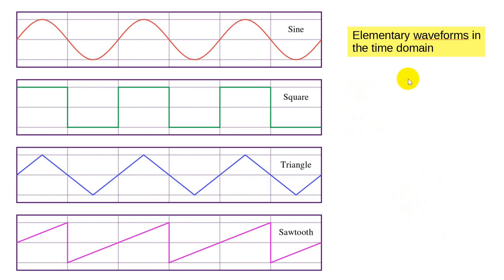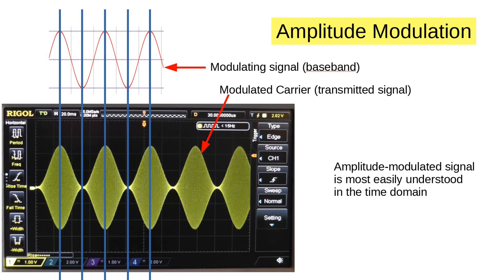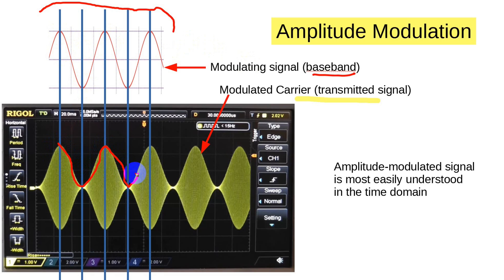This is a quick view of some elementary waveforms in the time domain. Time domain means that along this axis is time. Here's a sine wave, a square wave, a triangle wave, a sawtooth. In a very recent video, I showed this diagram showing the modulated carrier — this is AM at 100% modulation. This up here is the modulating waveform, the signal, sometimes called the baseband — it's just a simple sine wave. You can see that the envelope here matches the sine wave, and it centers itself on that.